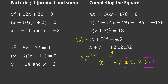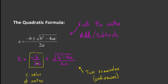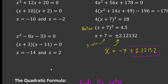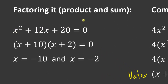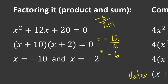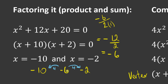How does factored form relate? It comes from that negative b over 2a, the x-value of the vertex. For the first equation, x squared plus 12x plus 20, I do negative b over 2a — since a is 1 it's just negative 12 divided by 2, which is negative 6. That's the x-value of the vertex. My solutions are negative 10 and negative 2. Negative 6 is directly between those two values — go 4 to the left and get negative 10, go 4 to the right and get negative 2. Equidistant.